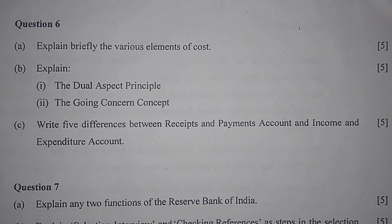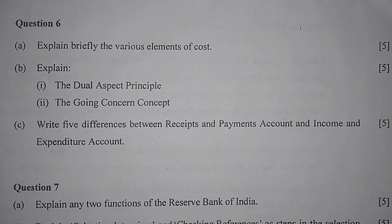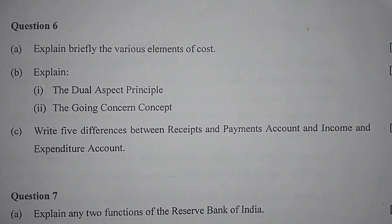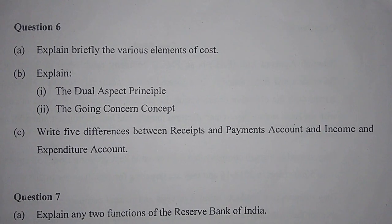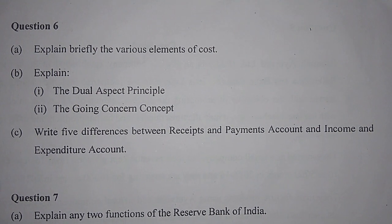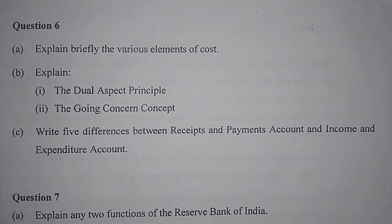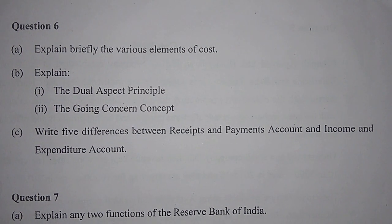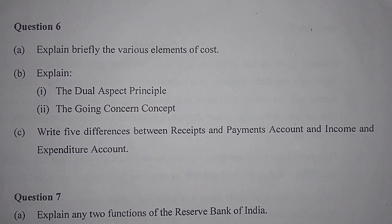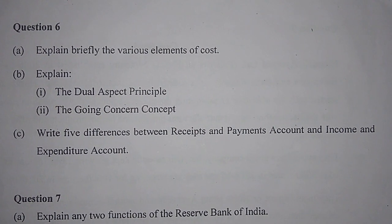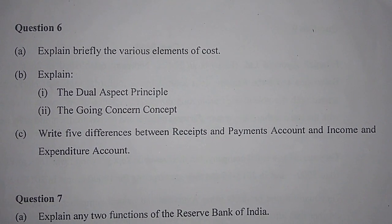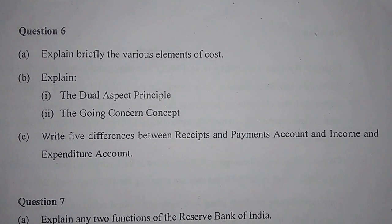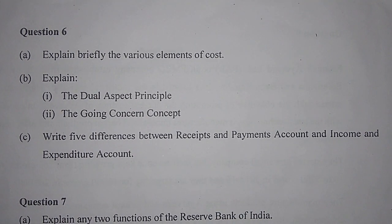The third element is expenses — costs incurred other than on material and labor, for the production, distribution, and management of the organization. There are two types: direct expenses, which can be directly identified with a particular product or job, and indirect expenses, which cannot be directly identified with a specific product or job.